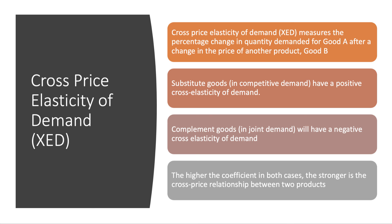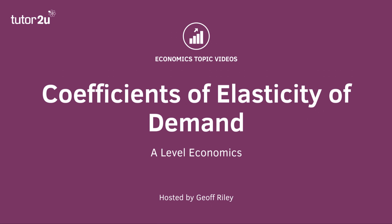Complementary goods are goods and services in joint demand — they tend to be bought together — and they will have a negative cross price elasticity of demand. When putting the numbers in, the sign makes a difference. The higher the coefficient for both substitute and complementary products, the stronger the cross price relationship between those two goods and services. Any unrelated products will have a zero cross price elasticity of demand. So there we go — a quick journey through the concept of coefficients of elasticity of demand.